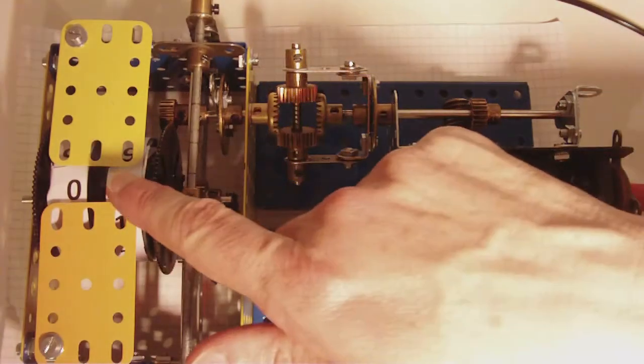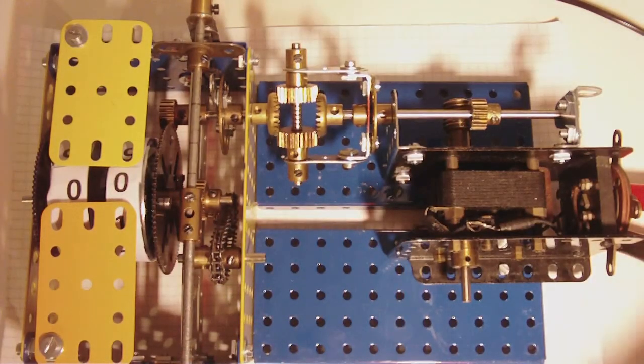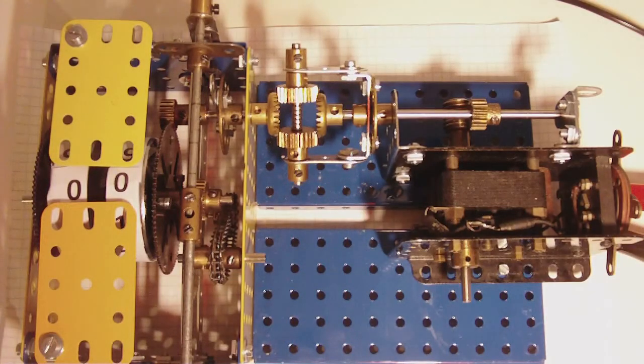There's another 5 to 1 reduction here, so that reel moves on by a tenth. Also, there's extra gearing around to the other reel, which means that one moves on by a hundredth.